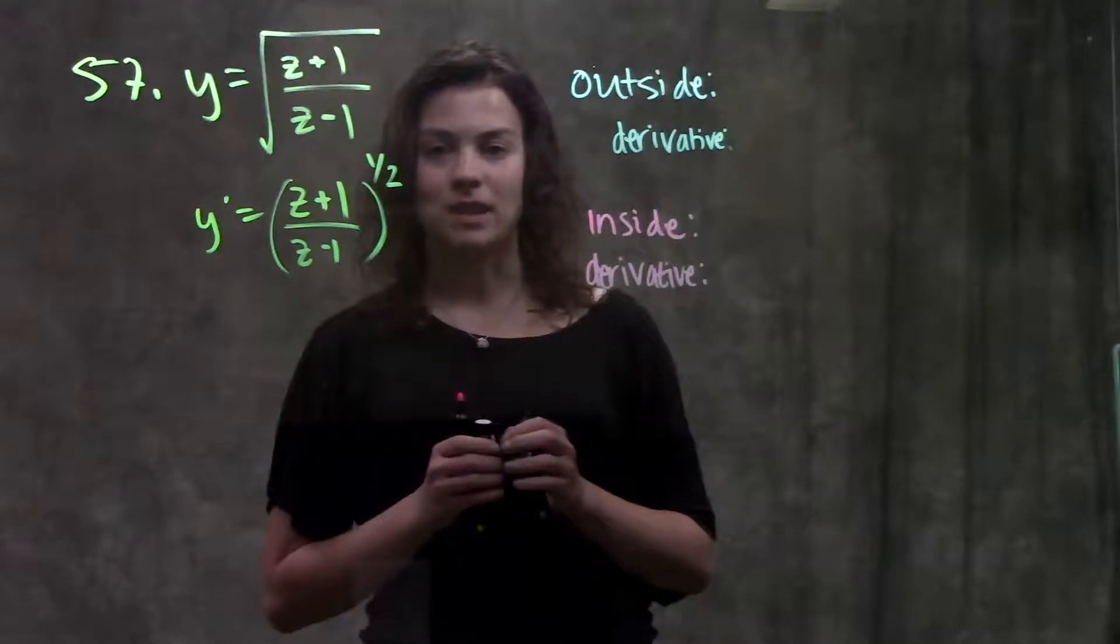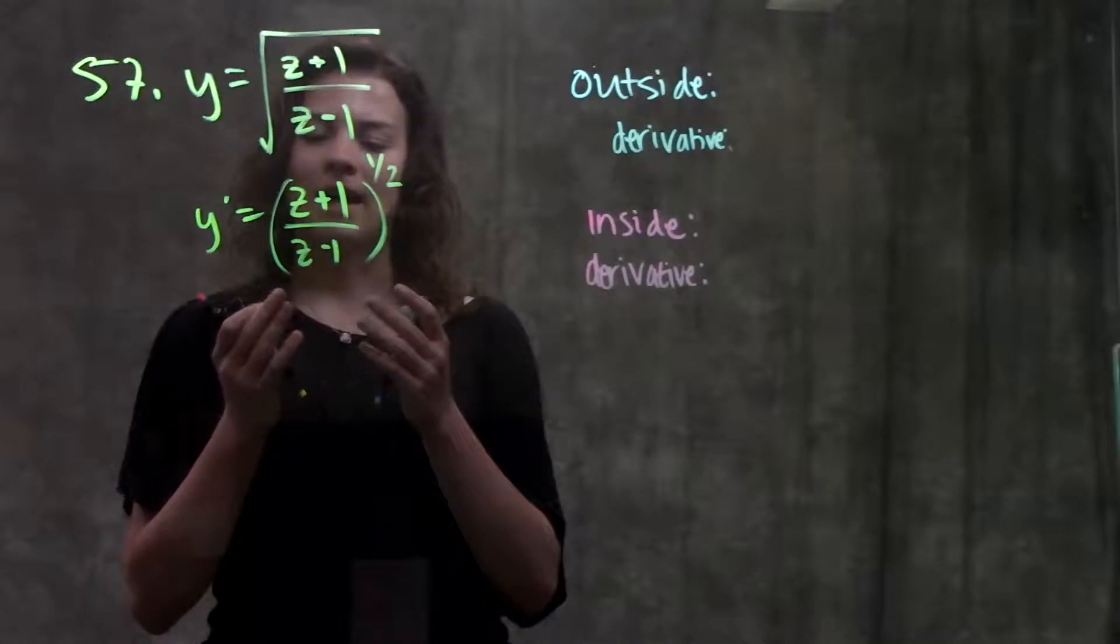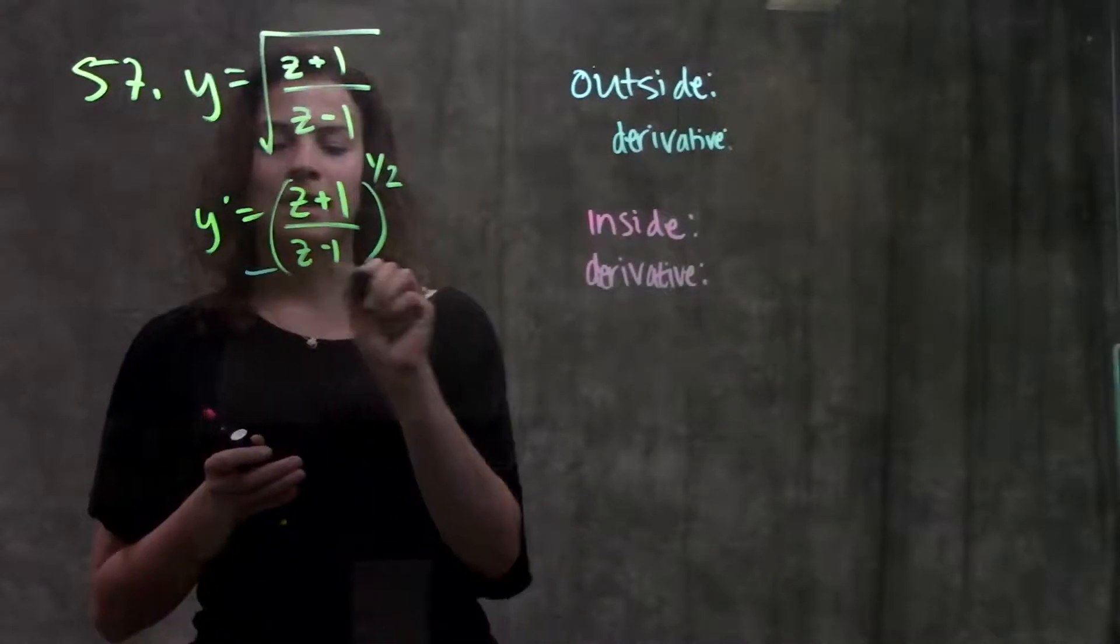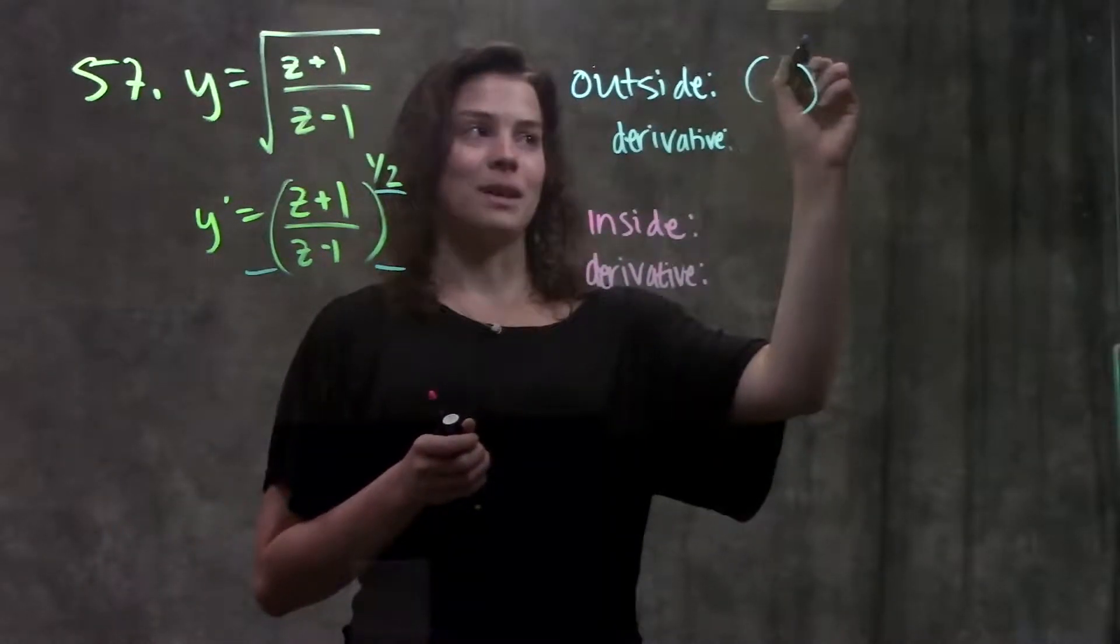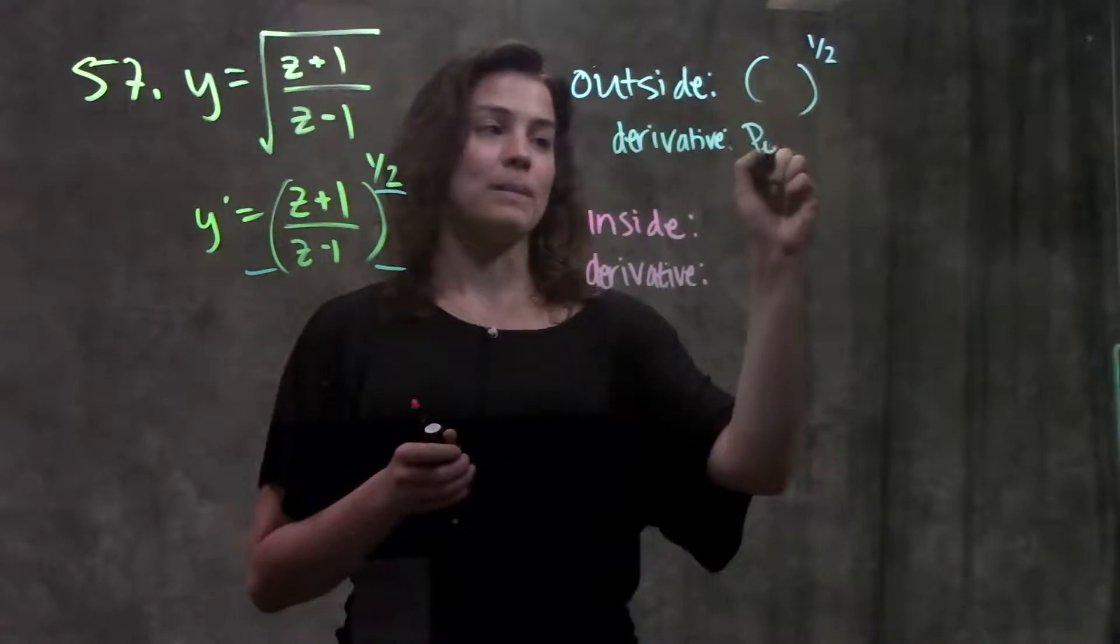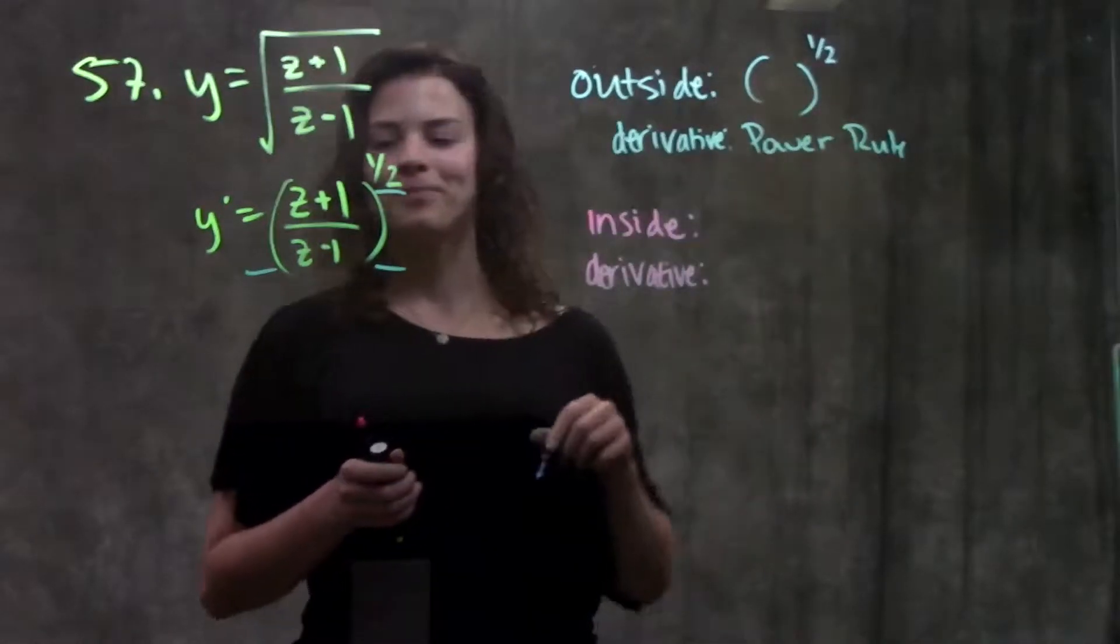So I'm going to identify my outside function. To identify my outside function, I imagine that I'm zooming out to this function, what's the first thing I see? First thing I see is something raised to the one-half power. So my outside function is something raised to the one-half power. To take the derivative of this, I'm just going to use my power rule. Bring the exponent to the front, and then subtract one.